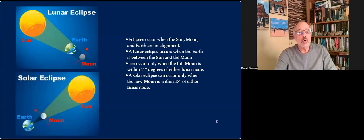Eclipses occur when the sun, moon, and Earth are in alignment. A lunar eclipse occurs when the Earth is between the sun and the moon, and can only occur when the moon is within 11 degrees of either lunar node. A solar eclipse occurs when the moon is between sun and Earth, and must be within 17 degrees of either lunar node.